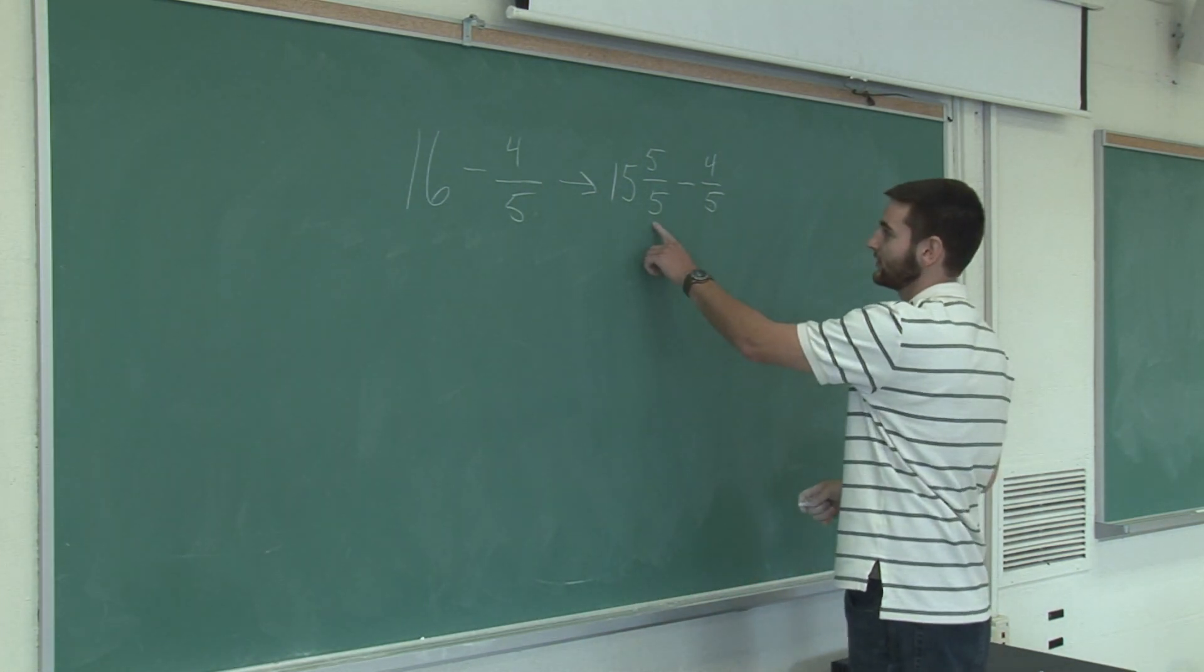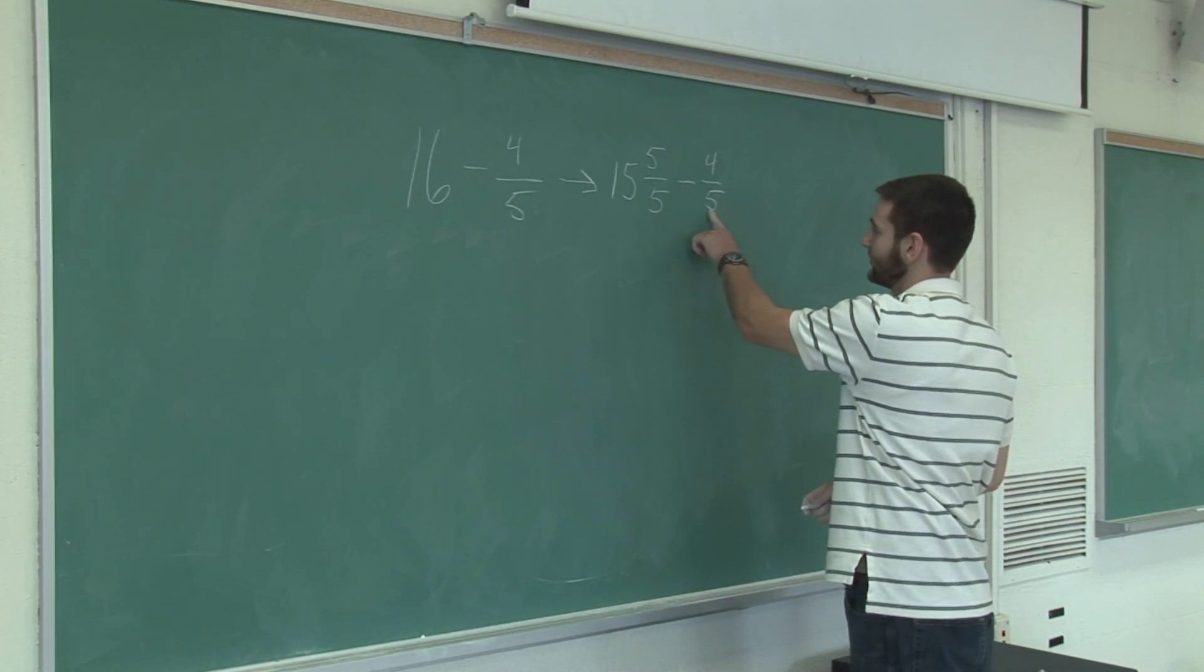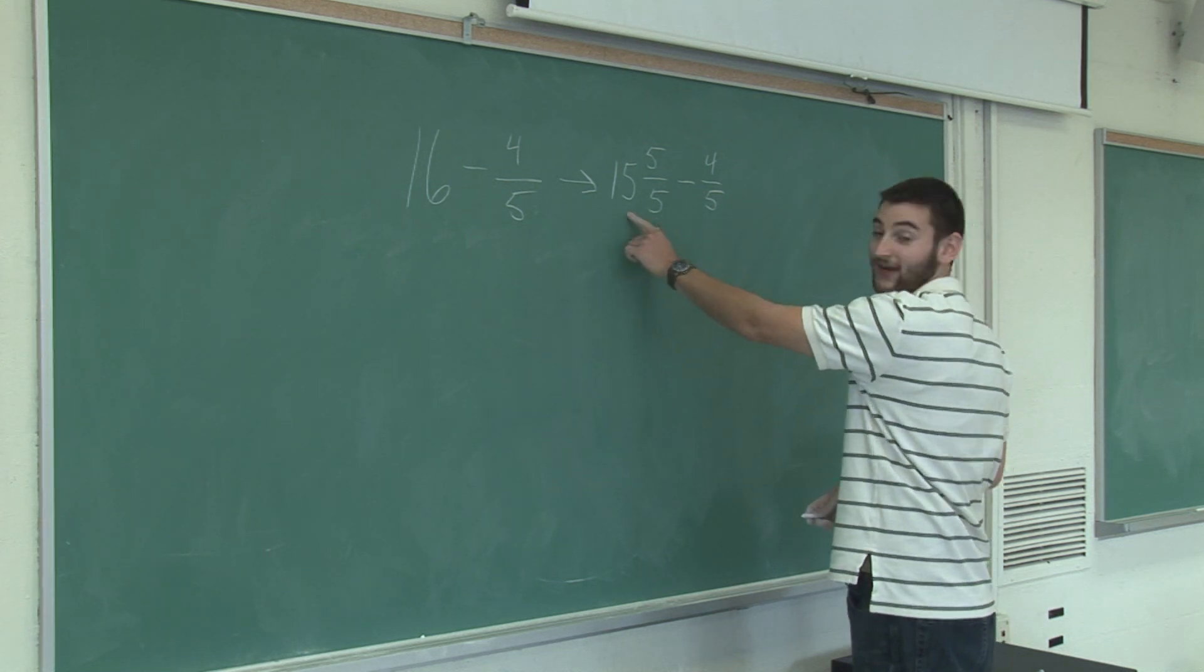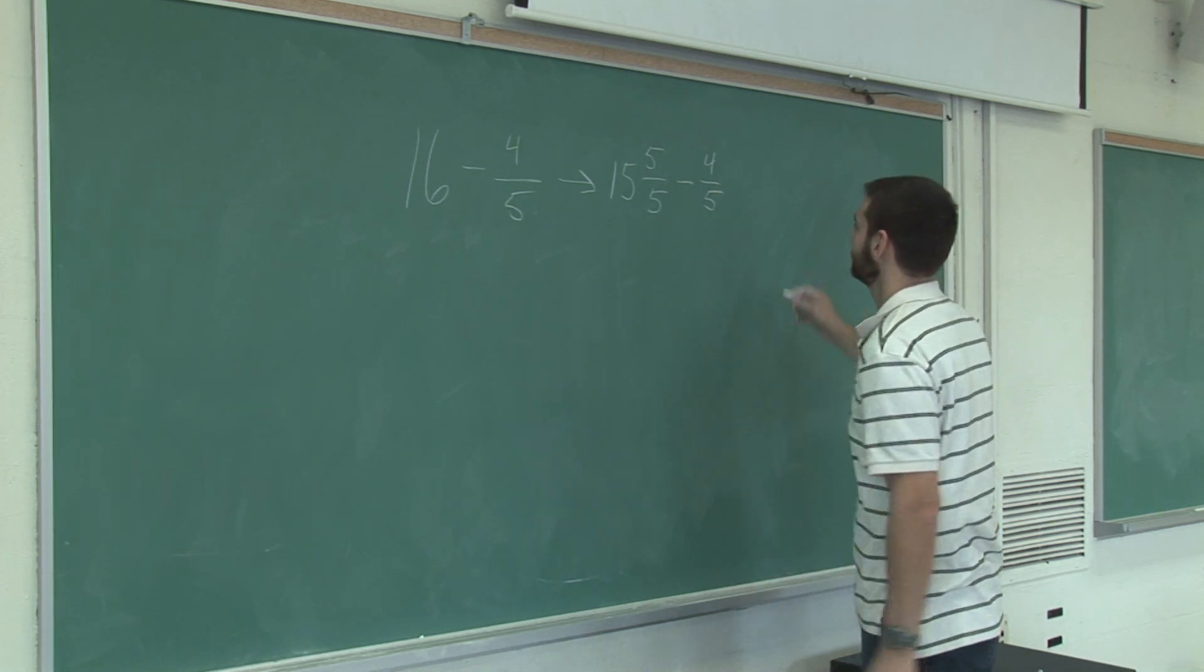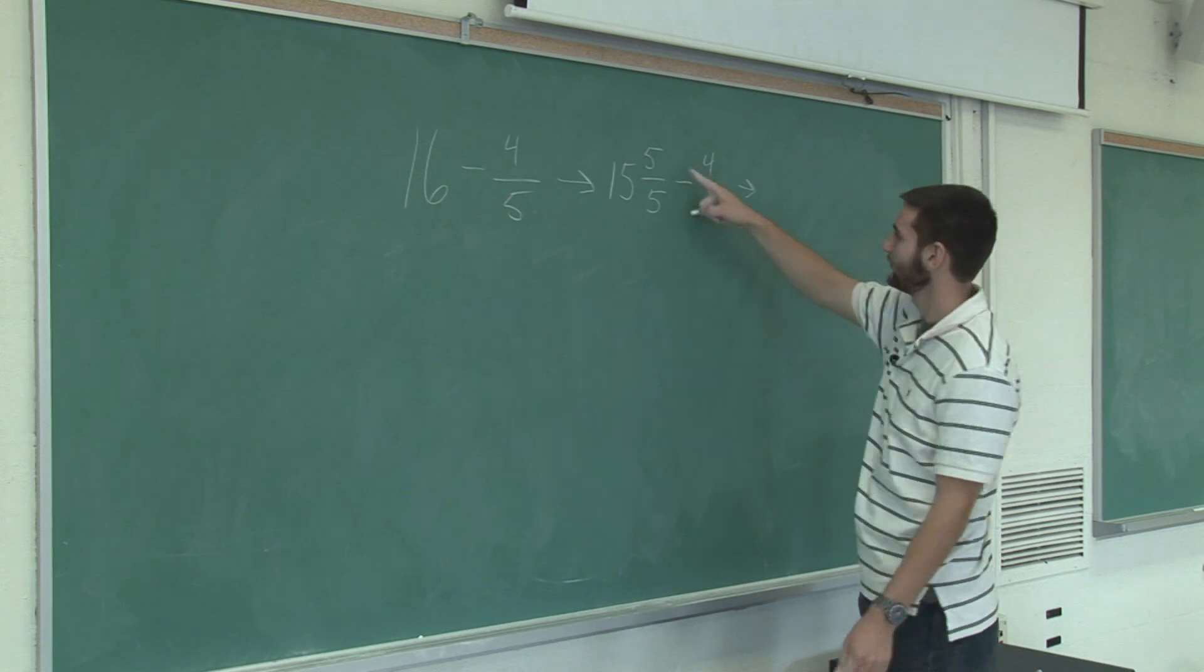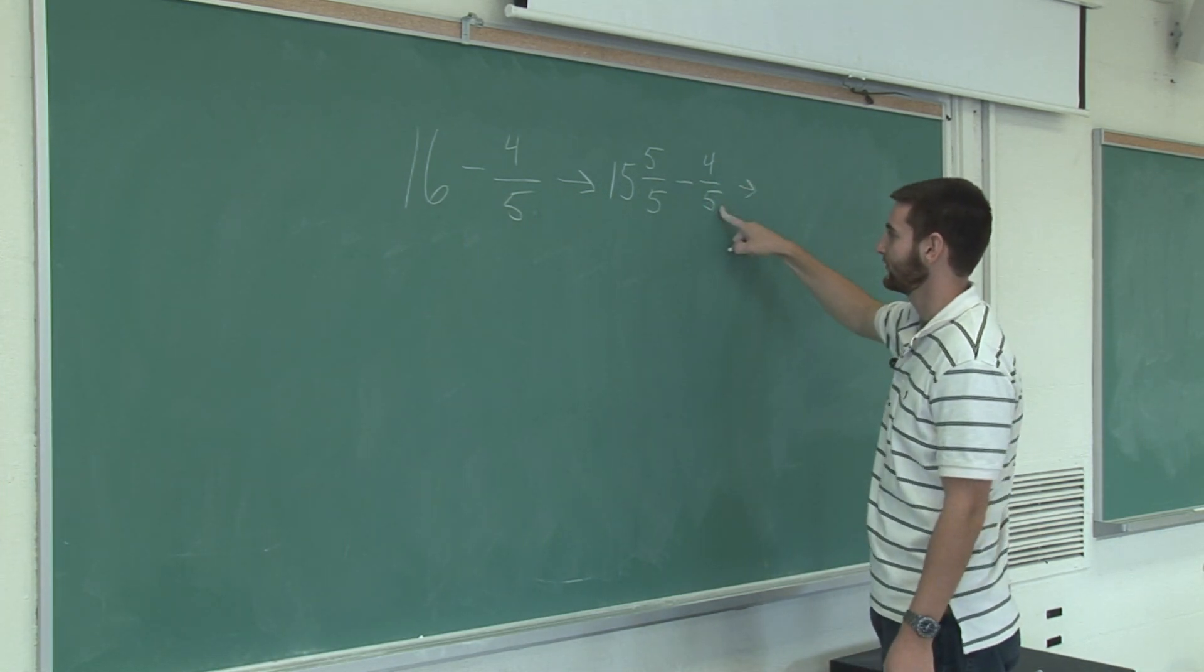And now what we do here is we take the 4 fifths and subtract it from 5 fifths and then add the 15 that we came with originally. 5 fifths minus 4 fifths is 1 fifth.